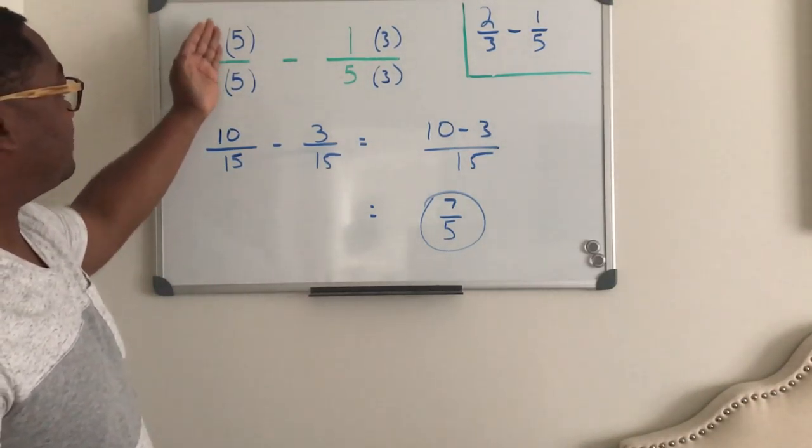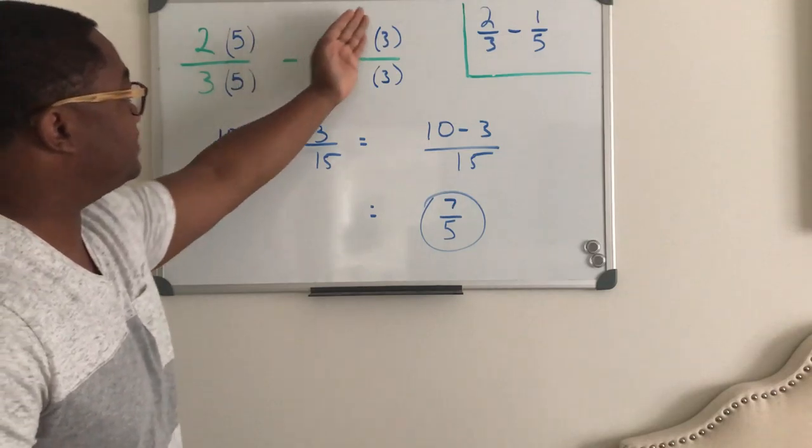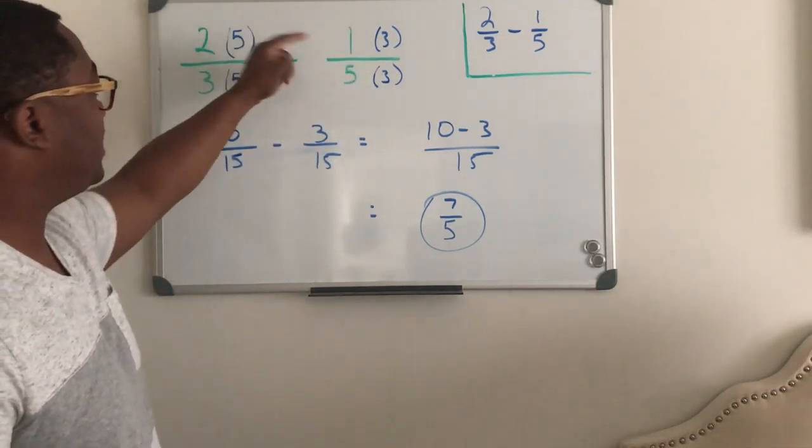and you can't just say three times five, and then five times three on the other side. You actually have to bring the three up here, and you have to bring the five up here.